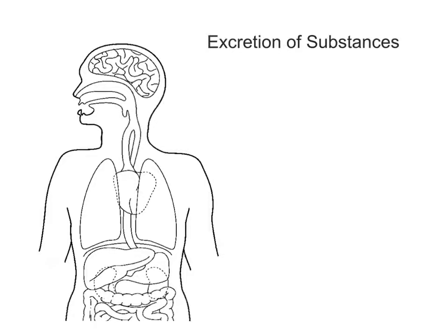Hello everyone. In this video we're going to be talking about excretion of substances, or more specifically waste materials. Let's begin by saying what the point of excretion is. Ultimately it's another way in which the environment of cells is controlled. In homeostasis you talk about the maintenance of a constant internal environment, osmoregulation, thermoregulation, and controlling blood sugar level. But excretion is also part of that.